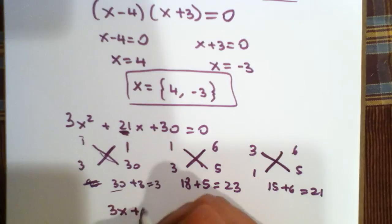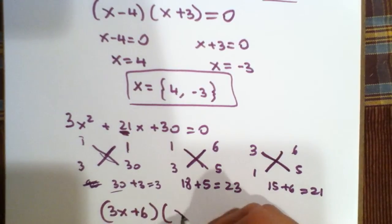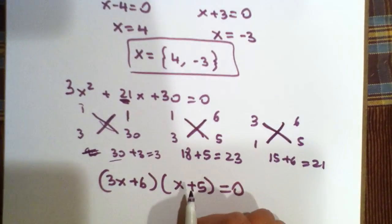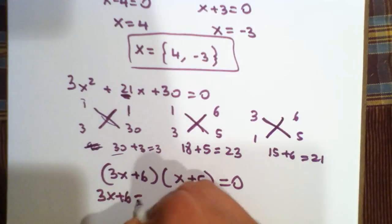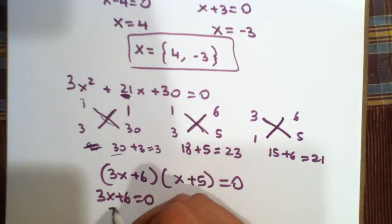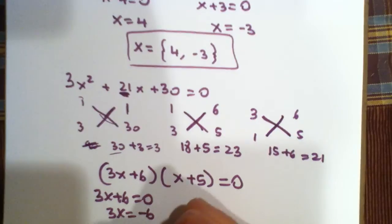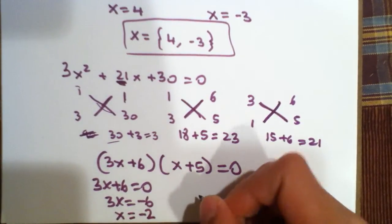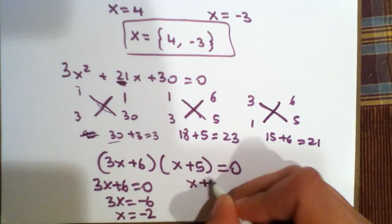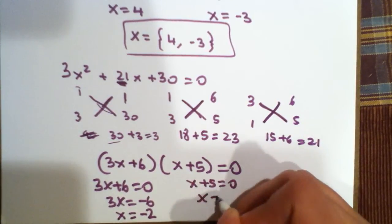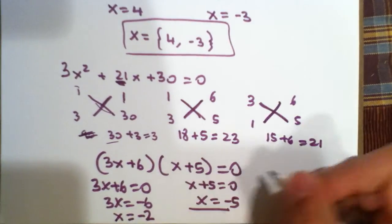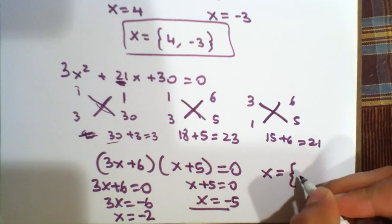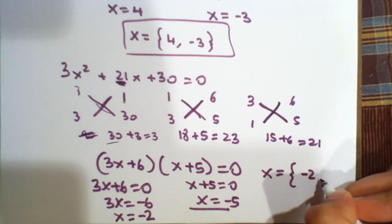It'll be 3x plus 6 times x plus 5 is equal to 0. Again, we can solve as two different separate equations. 3x plus 6 is equal to 0, which would mean 3x is equal to minus 6, and x is equal to minus 2. And the other solution will be x plus 5, and x is equal to minus 5. So the solution set for this will be minus 2 and minus 5.